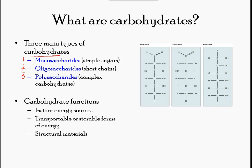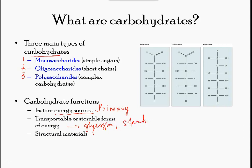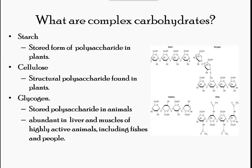Three main functions of carbohydrates are: first, they are the primary source of energy; second, they are a stored form of energy, such as glycogen in animal cells and starch in plant cells; third, many transporters in the cells are carbohydrate in nature, and they are also used as a structural component of the cell.